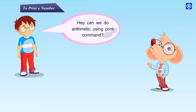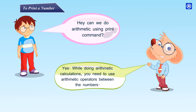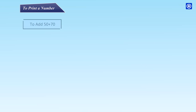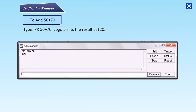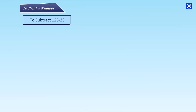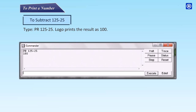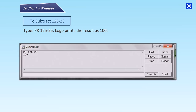Yes, you can do arithmetic using the print command. While doing arithmetic calculations you need to use arithmetic operators between the numbers. To add: type PR 50 + 70 — Logo prints the result as 120. To subtract: type PR 125 - 25 — Logo prints the result as 100.